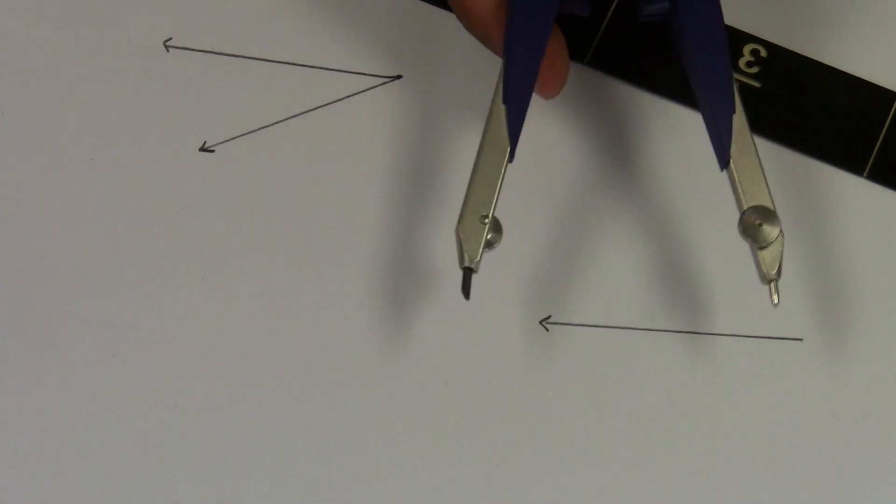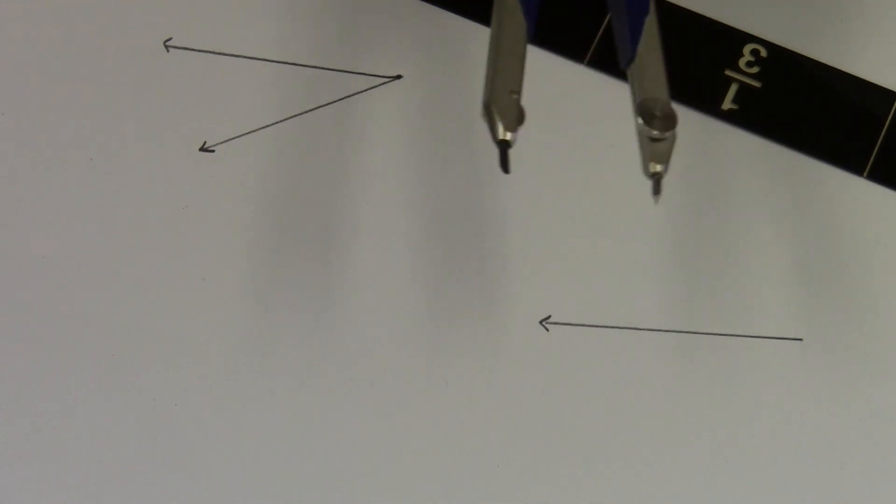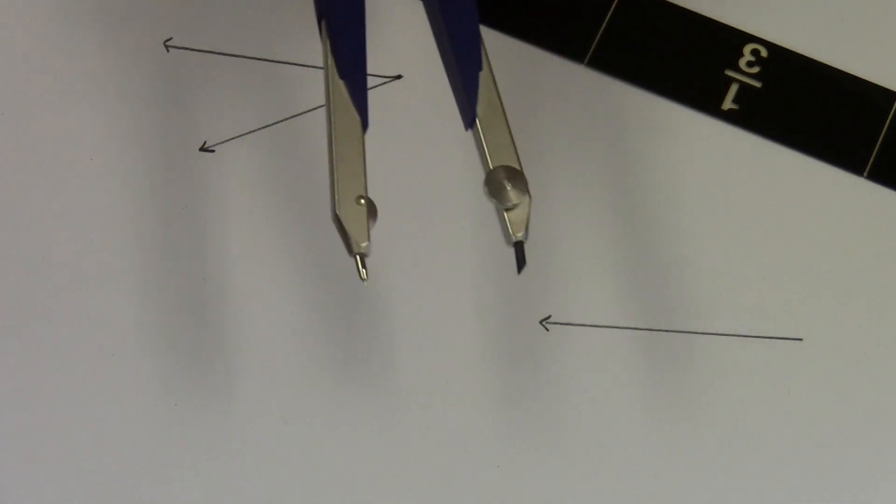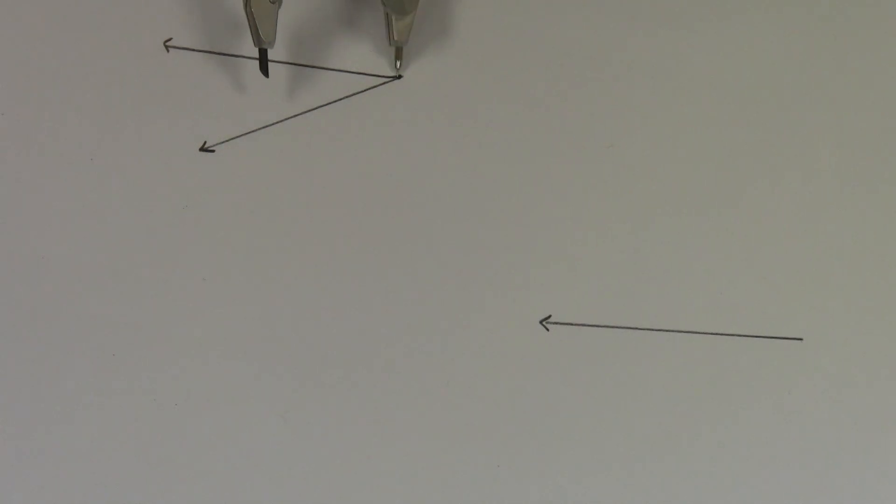What you'll do is open up your compass any amount that you want. I'm going to make it a little bit smaller, right around here. Any amount that you want, you're going to put your needle on the vertex of your angle and mark off a certain distance from the vertex.